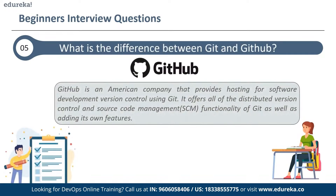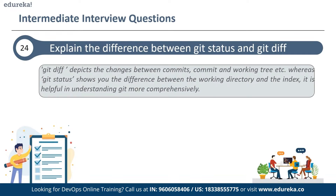The next question is: what is the difference between Git and GitHub? Git is a distributed version control system with a working tree. Git status shows the difference between the working directory and the index, and is helpful in understanding Git more comprehensively. Git diff is similar to git status — the only difference is that it shows differences between various commits and also between the working directory and the index.